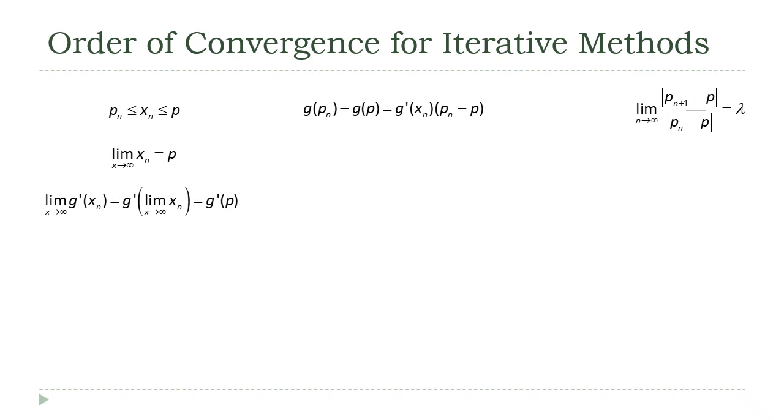All right, so now let's switch back over to our mean value theorem result here. Remember that g of p sub n is just p sub n plus 1, and g of p is just p. Now, if we solve this equation for g prime, we get this equation, and g prime of x sub n is equal to the ratio of those p values. And hopefully now you're starting to get an idea where we're going to end up, because that expression on the left-hand side is very similar to what we've got up there in the upper right-hand corner, that statement that I said is what we were ultimately aiming for.